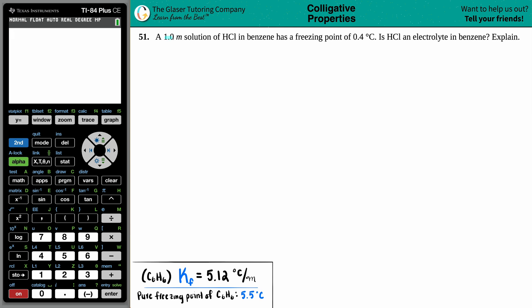Number 51. A 1.0 molality solution of HCl in benzene has a freezing point of 0.4 degrees Celsius. Is HCl an electrolyte in benzene? Explain.